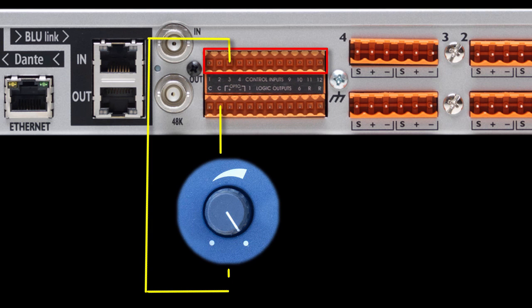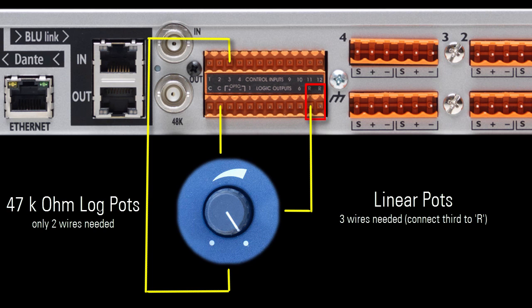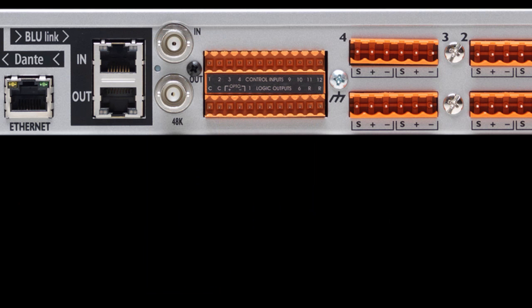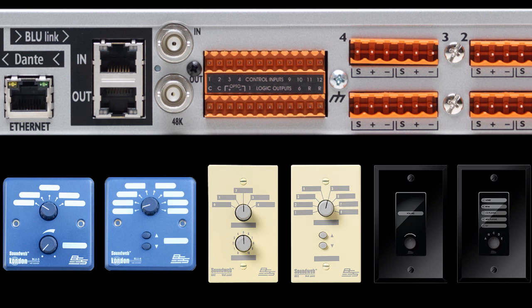If you are using potentiometers, it's recommended to use 47 kilo-ohm logarithmic potentiometers, but there are two reference ports which allow you to use linear potentiometers if needed. Using GPI ports, you can assemble your own analog controller, or you could even order a prefabricated analog controller from BSS.